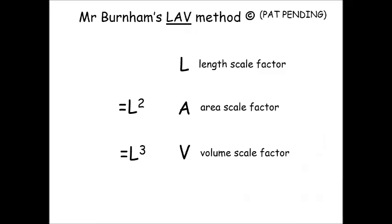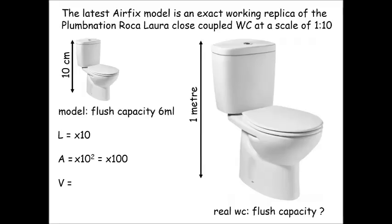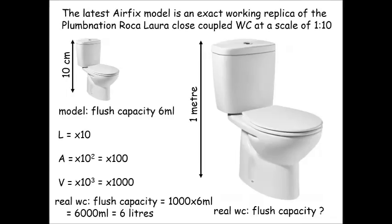Let's use the LAV. Write down LAV and fill in what we know. The length scale factor is times 10. The area scale factor will be the square of this. 10 squared is times 100. The volume scale factor will be the cube of the length scale factor. 10 cubed is 1000. The question is now really simple. The bigger flush capacity is 1000 times 6 ml, which is 6000 milliliters or 6 liters.